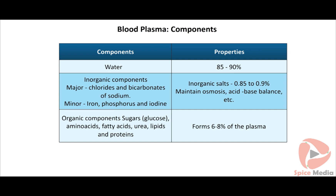The total salt content in blood plasma is about 0.85–0.9%. The chlorides and bicarbonates of sodium are the major inorganic salts present in the plasma. Apart from this, minute amounts of iron, phosphorus and iodine are also present. These salts maintain osmosis, acid-base balance, and so on.